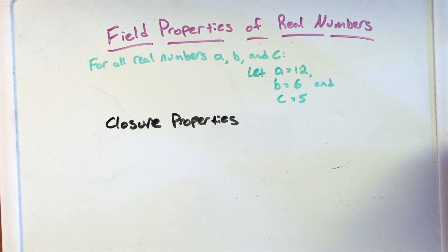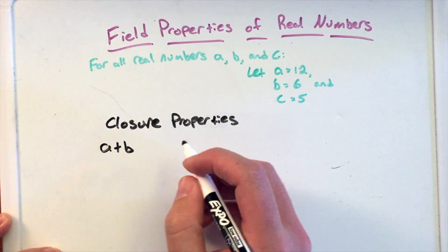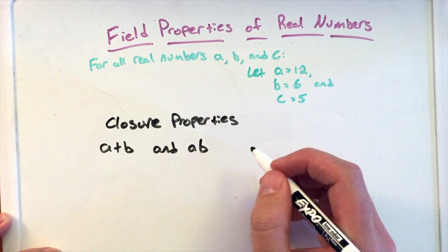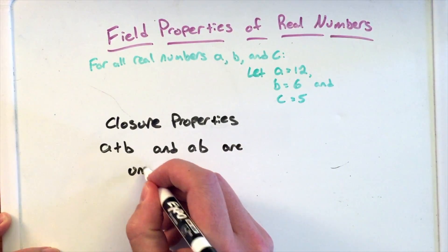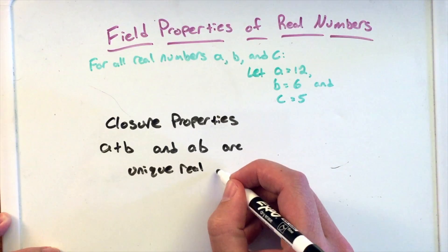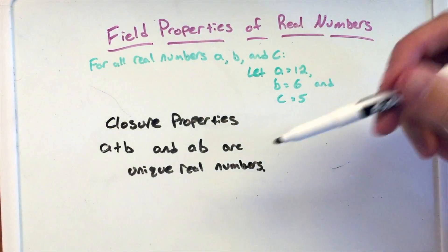So the closure property is the first one I'm going to talk about here. The closure property states that a plus b and a times b are unique real numbers.